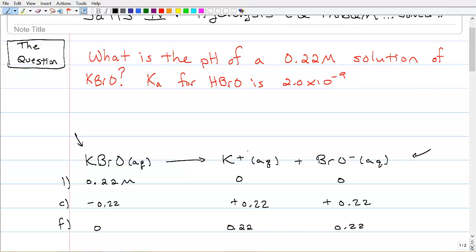From there, we have two options of things that might actually break apart with water. The K plus is not going to. We talked about that before. And the reason is because it's part of a strong base. That's what its parentage is. And strong bases don't make equilibrium. They just break apart. But BrO minus, we already know right here, it's got a Ka and it's related to this thing called HBrO.